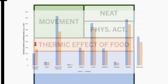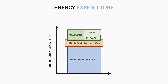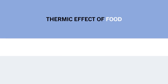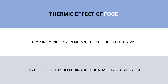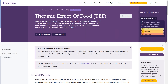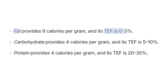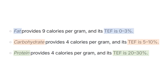Next we have the thermic effect of food. This is the temporary increase in our metabolic rate used to intake, digest, absorb, and metabolize the food we eat. This is generally thought to contribute around 10% of total daily energy expenditure, but the exact value will differ based on how much we eat and what macronutrients are consumed. According to Examine, protein increases the thermic effect of food the most, while fat has the smallest increase. So a high protein low fat diet might expend a little more energy per day compared with a low protein high fat diet.